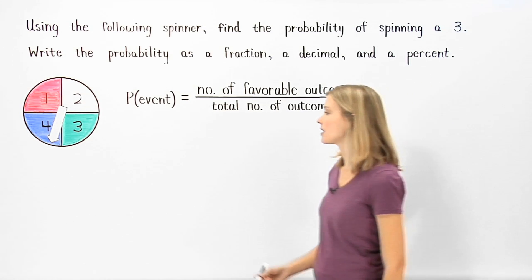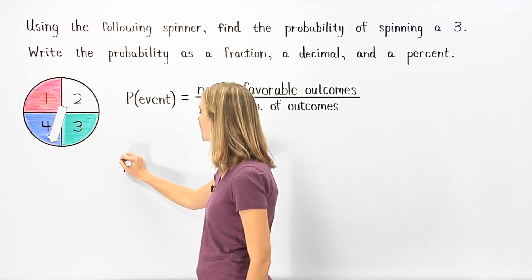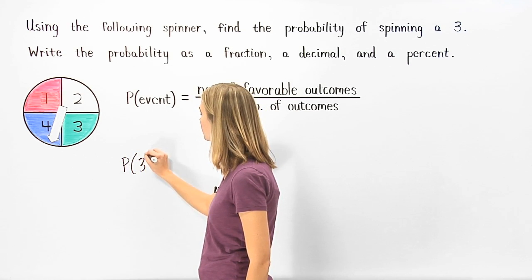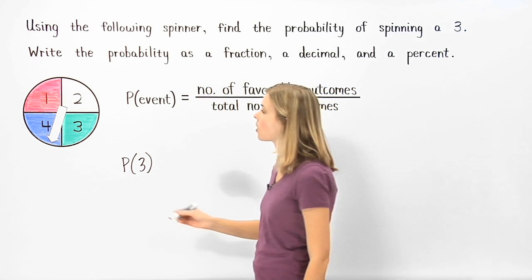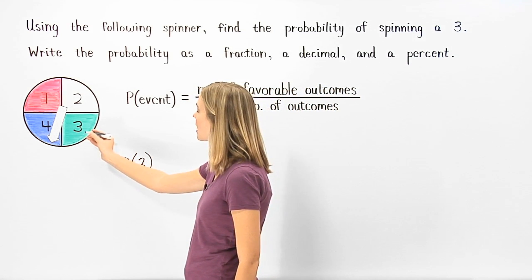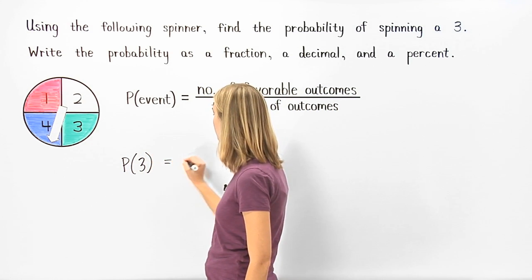In this case, since we're asked to find the probability of spinning a 3, the favorable outcome is spinning a 3. And since there's only one 3 on the spinner, the number of favorable outcomes is 1.